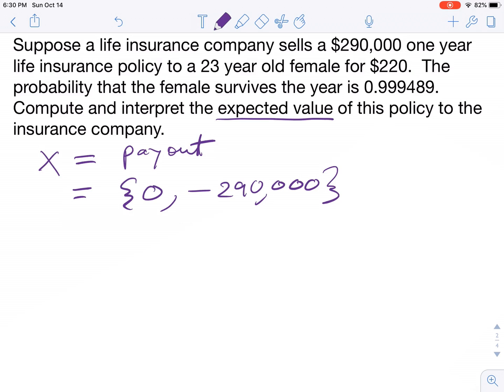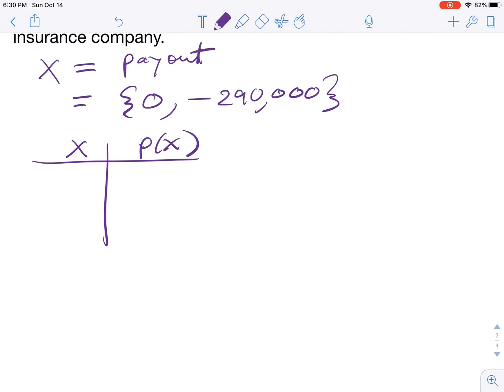All right, so that's our random variable. Now, a probability distribution, how do you make that? Well, you put the values of the random variable on the left and their probabilities on the right.